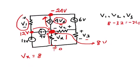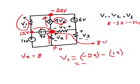Now we know this point is 12 volts and this point is minus 24 volts, so V1 will be minus 24 minus 12, which is minus 36 volts. So that's our V1.